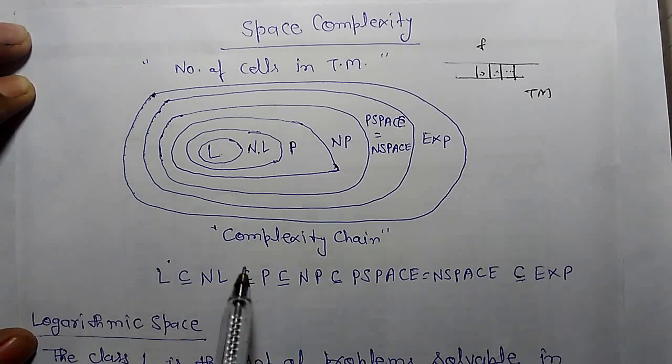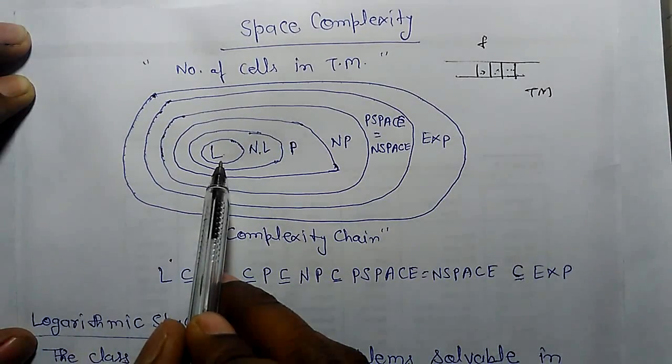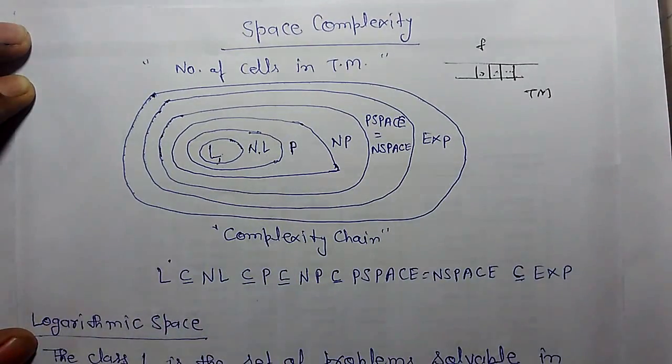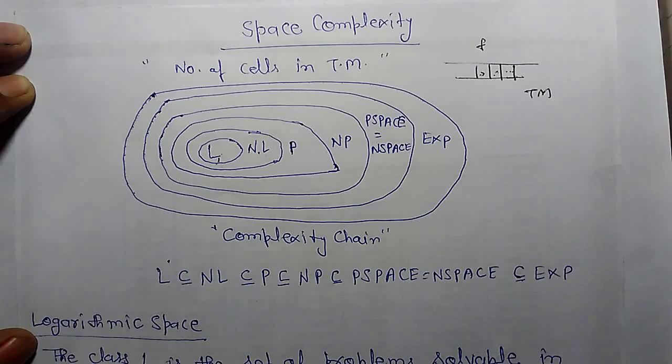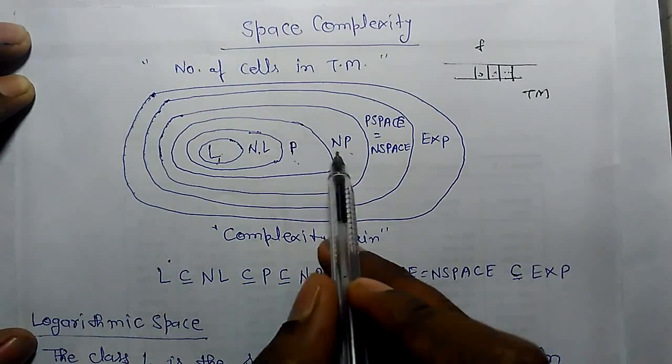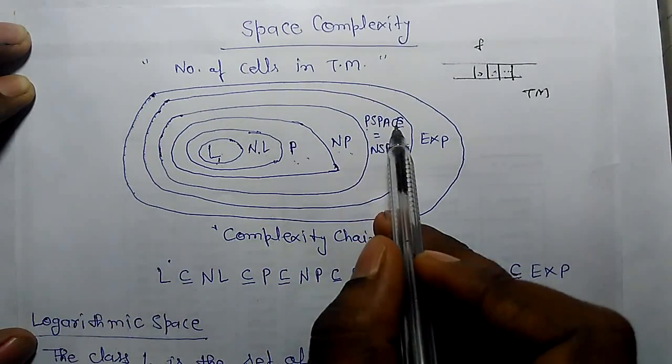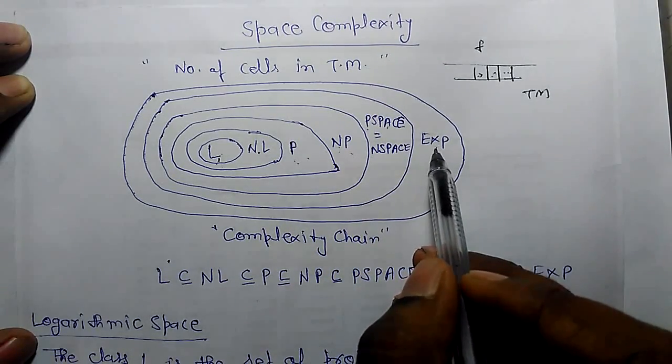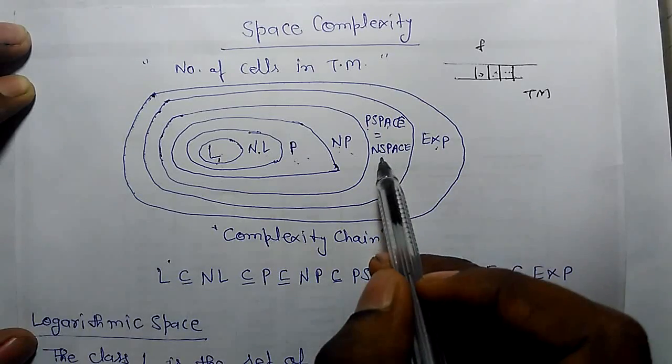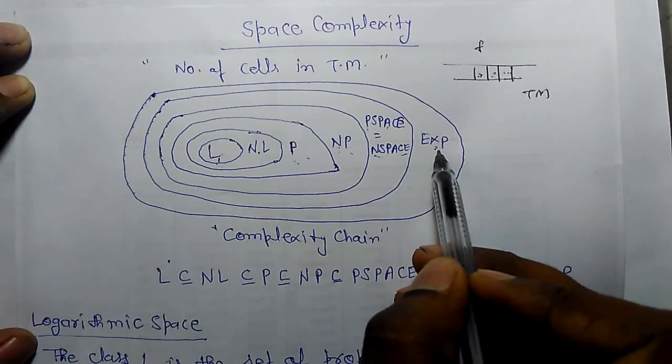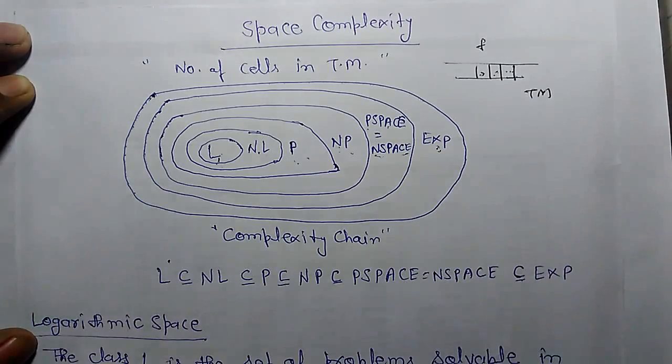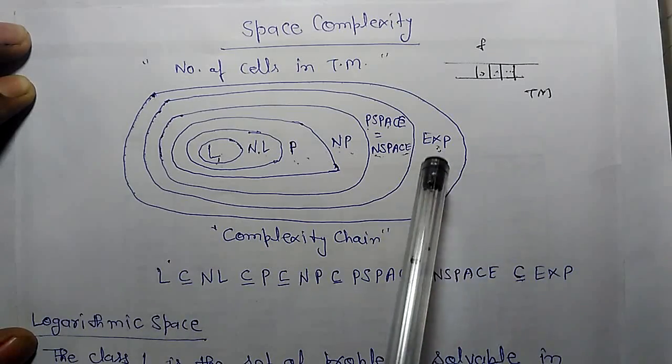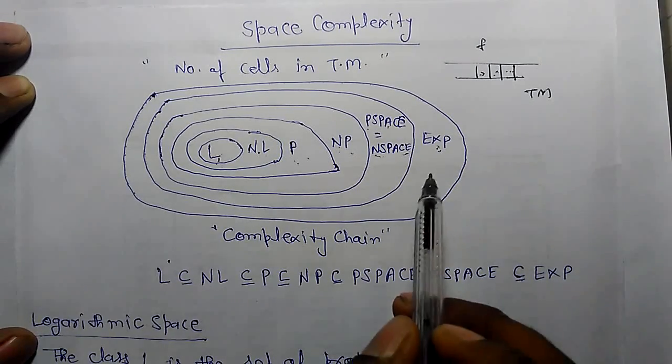This is the complexity chain: L for logarithmic space, NL for non-deterministic logarithmic space, P and NP which we have already learned, PSPACE which is polynomial space above NP, and above polynomial space is exponential space. If some algorithm requires exponential space, it will occur in this column.